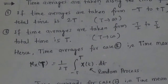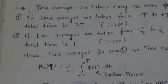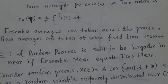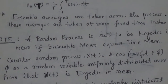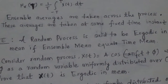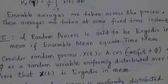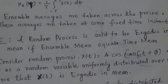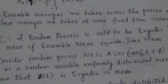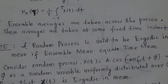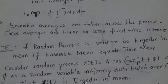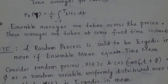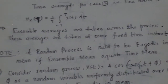Remember, time averages are taken along the whole time — that is, T approaching to infinity. Now we will see the ensemble averages. Ensemble averages are taken across the process; these averages are taken at some fixed time instant. If you have an ensemble of 3 random processes observed at some time instant, say t1, you can calculate the average of random variables observed at that time instant. So ensemble averages are taken at a fixed time instant, whereas time averages are taken along the whole time for the process.